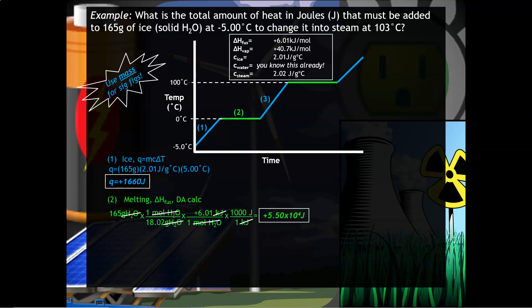Part three uses liquid water and Q = mcΔT because there is a change in temperature. We use 165 grams, the specific heat of water = 4.18 joules per gram·°C, and a temperature difference of 100 degrees Celsius (from 0 to 100°C). The Q value is positive 6.90 × 10⁴ joules.